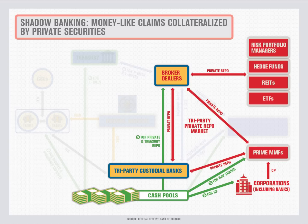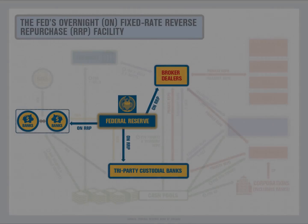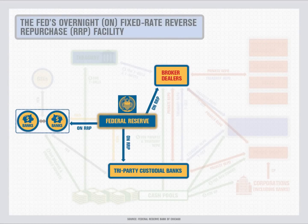The extent to which a change in the federal funds rate is transmitted to interest rates in the shadow banking markets mainly depends upon banks' perceived degree of substitution across different lending opportunities. You may have noticed that so far, the Fed implemented monetary policy solely through interactions with bank counterparties. But with the recent introduction of an overnight reverse repo facility, the Fed can now interact directly with a broader range of money market participants, including both traditional counterparties such as banks and broker-dealers, and non-bank counterparties who play a major role in money markets.